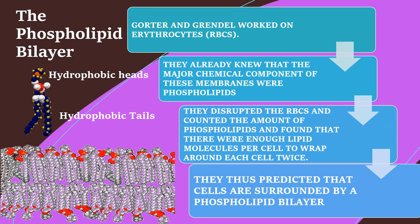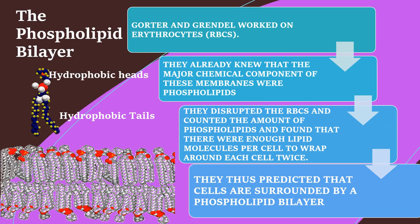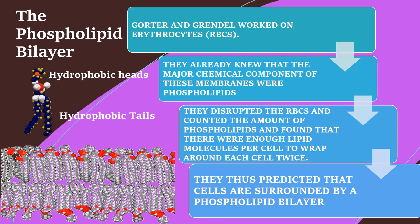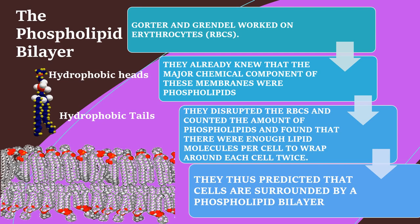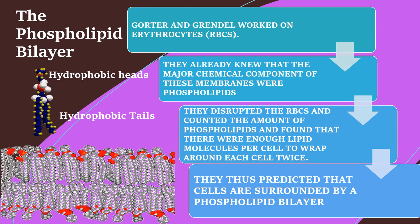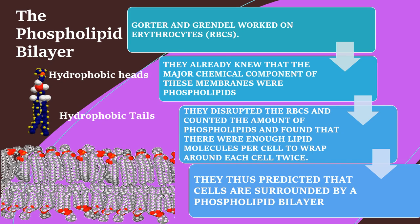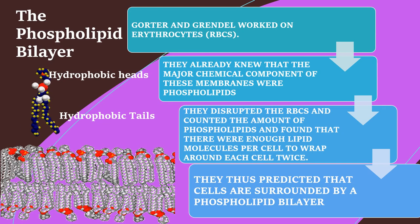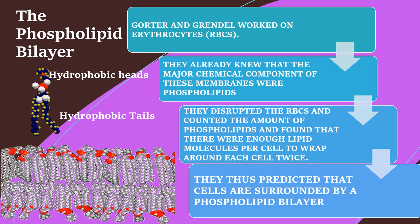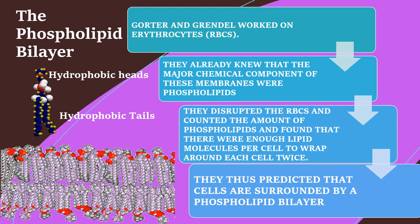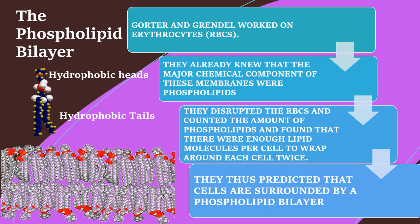The plasma membrane of mammalian red blood cells, erythrocytes, have been particularly useful as a model for studies of membrane structures. Mammalian red blood cells do not contain nuclei or internal membranes, so they represent a source from which pure plasma membranes can be easily isolated for biochemical analysis. Indeed, studies of red blood cell plasma membranes provided the first evidence that biological membranes consist of lipid bilayers.